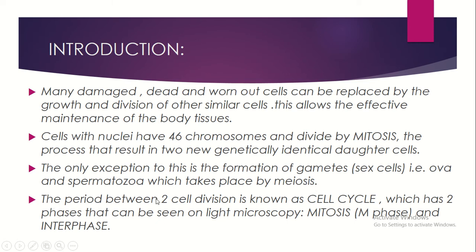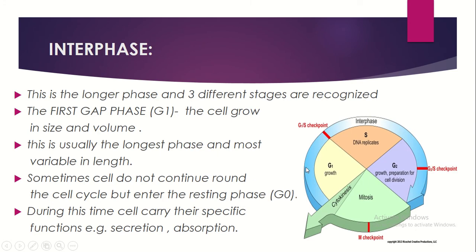The period between two cell divisions is known as the cell cycle. One cell divides, and it takes a complete cycle — the cell cycle — before the cell can divide again. This process has two phases that can be seen by light microscopy: the mitosis M phase and interphase. The blue portion in the diagram represents the interphase.